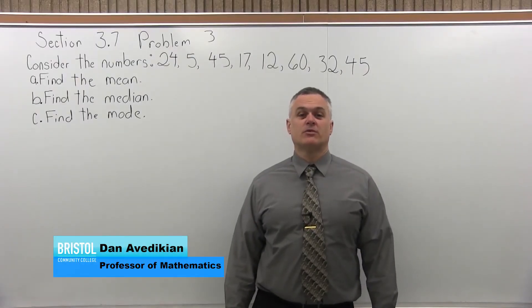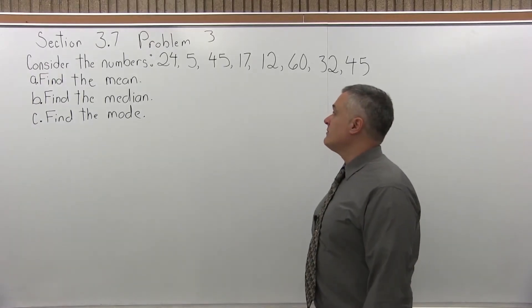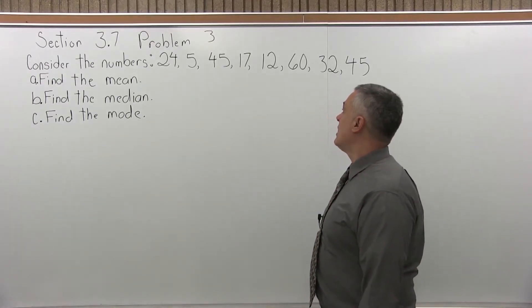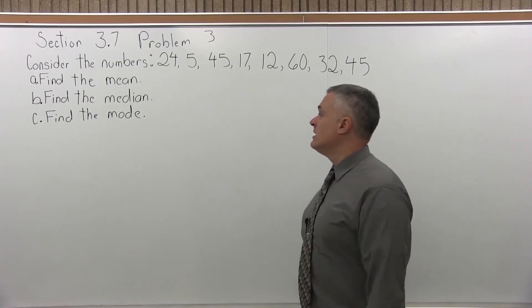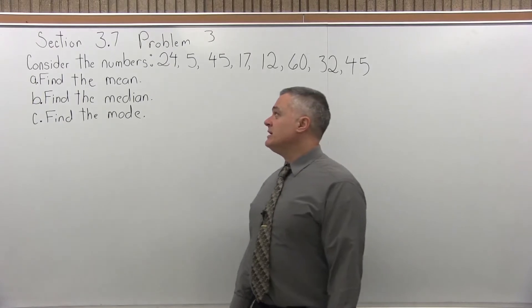This is Section 3.7, Problem 3. It says, consider the numbers 24, 5, 45, 17, 12, 60, 32, and 45. Find the mean, find the median, find the mode.